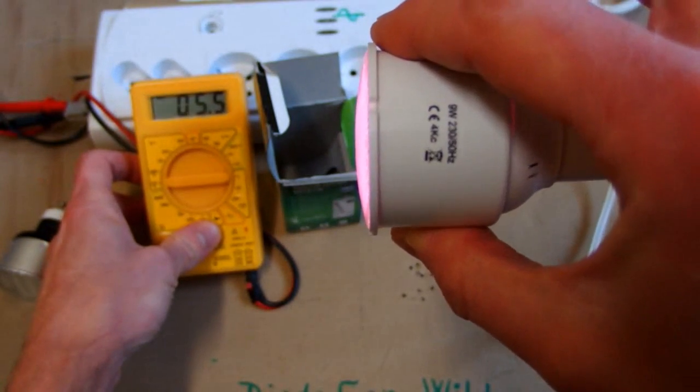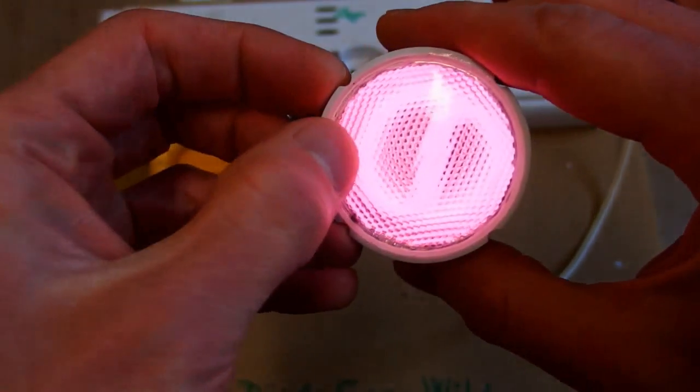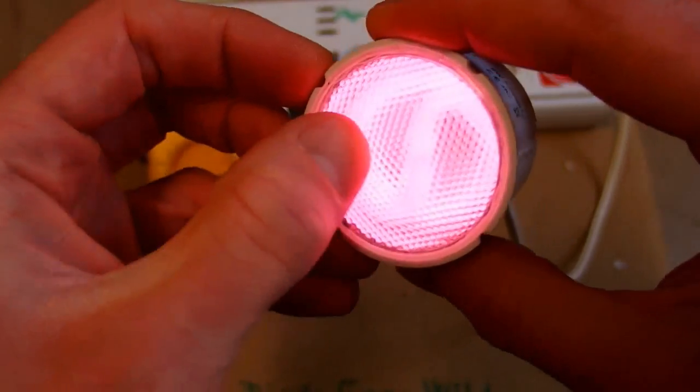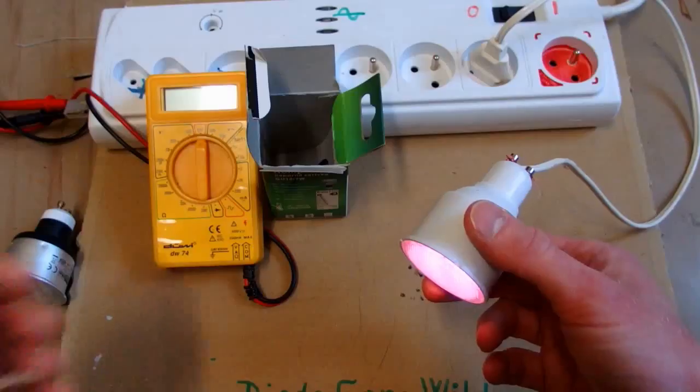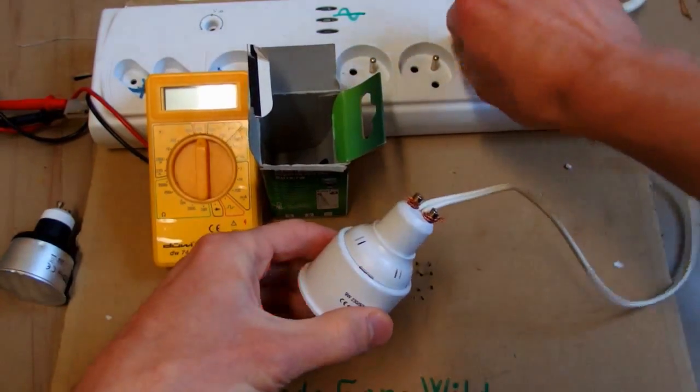This one should be 9 watts. I don't know what is wrong about this one, but maybe it's a wrong gas filling. Maybe there is just argon without the mercury in it. It really produces almost no light. So let's open it up.